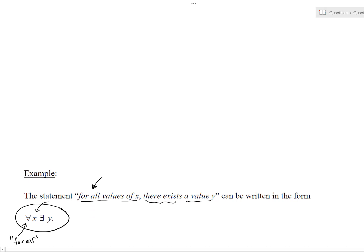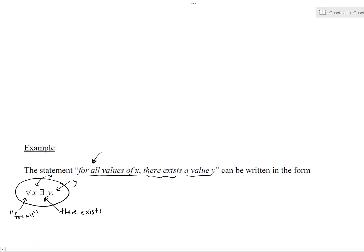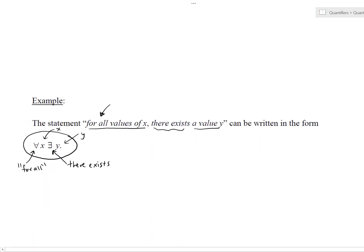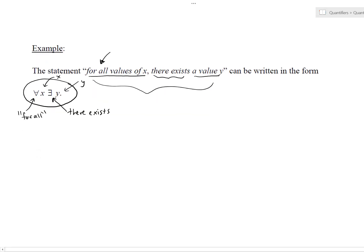So, the universal quantifier and the existential quantifier, we would write like so right here. That symbol for all, and then of course, X. This symbol, there exists, and then a Y. For all X, there exists a value of Y. See how long that is to write in words? And then if you just write that statement down below using the quantifiers, much less space taken up, an advantage.